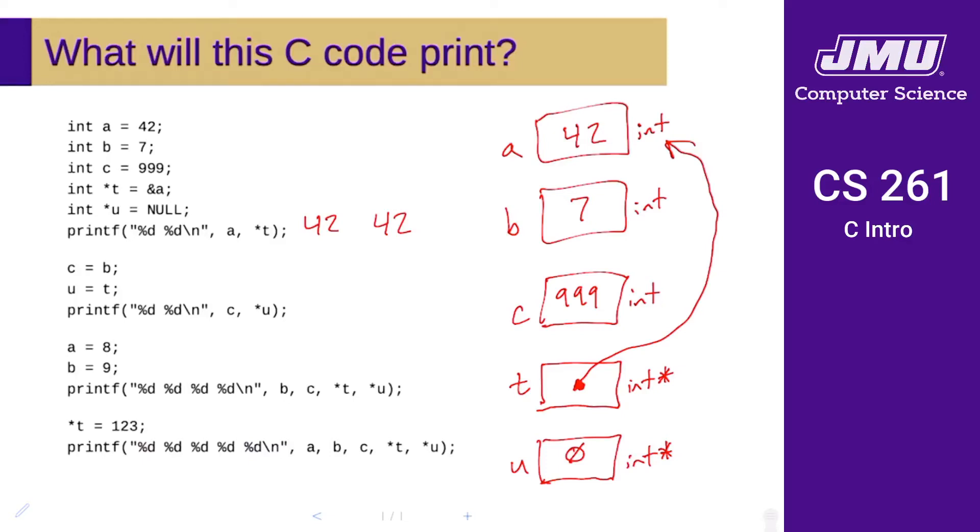The next two things are two assignments here. We set c equal to b, and we set u equal to t. Both of these lines are doing very similar things: they're taking the value of the thing on the right-hand side and copying it into the location on the left-hand side. This is going to take the value of b and store that in c. The value of b is seven, so the new value of c after this line executes is seven.